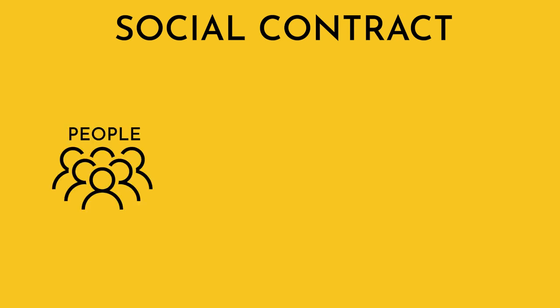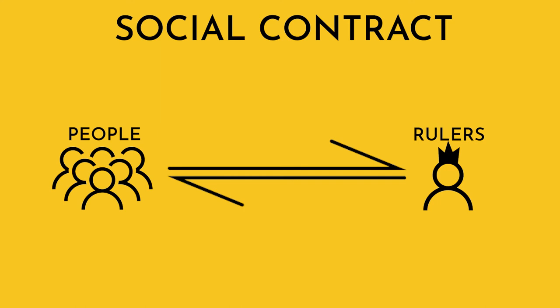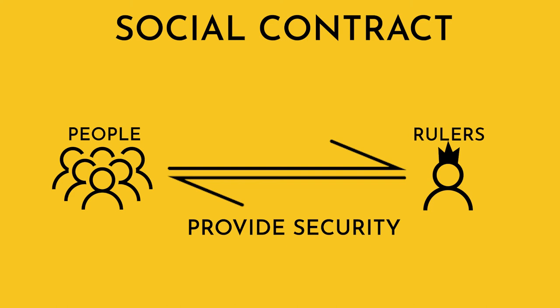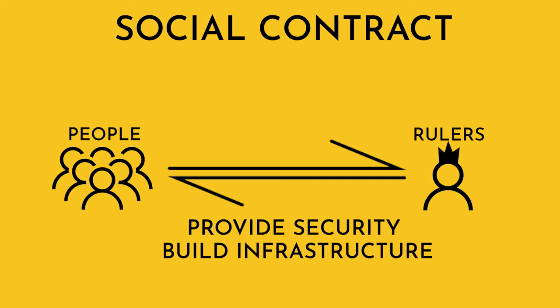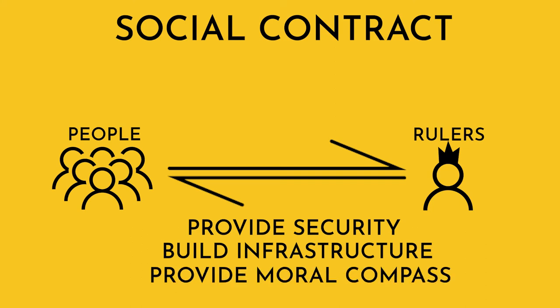Those are the basic issues when we talk about political economy overall — the interaction of those factors. What is the real relationship between normal people and elite rulers? Most academics will say this is a social contract. There are three basic things the government and elite rulers promise to the people: one, to provide security and defense from harm; two, to build infrastructure — banking is a type of infrastructure, roads are a basic infrastructure; and three, to provide a moral compass, whether it's religion, a certain culture, or a certain type of leadership. That is the social contract.